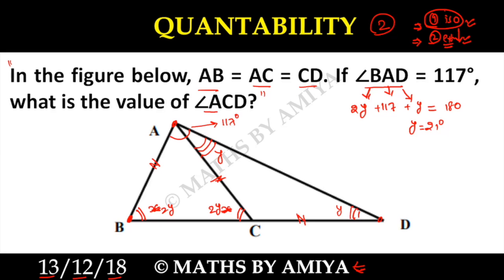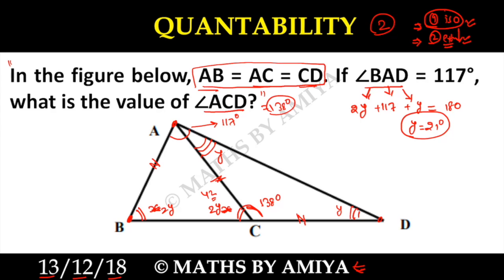And what do we have to find? We have to find angle ACE. If Y is 21 degrees, then 2Y is 42 degrees, and with the linear pair this angle is nothing but 138 degrees. So the answer is 138 degrees. This type of diagram frequently appears in examinations such as CAT, JAT, and SSC.